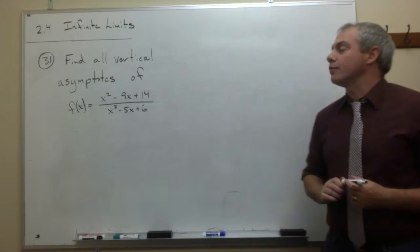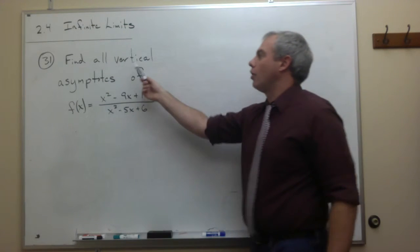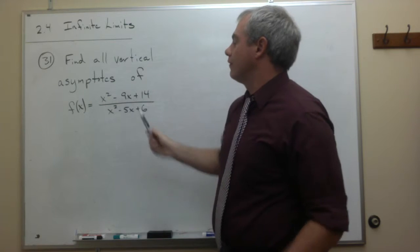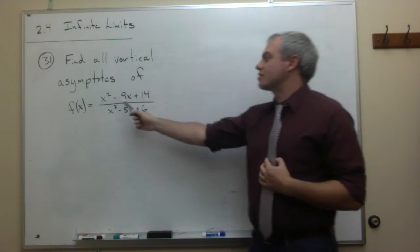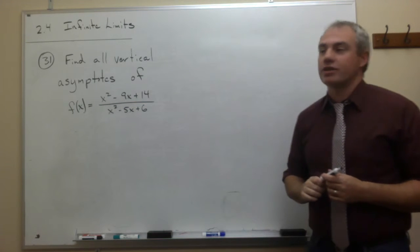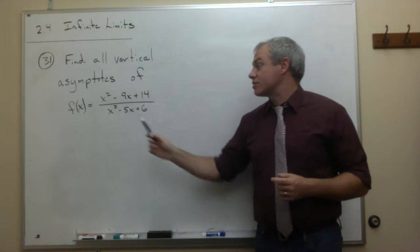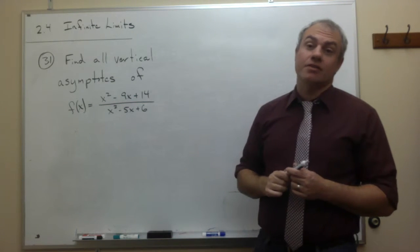For problem number 31, we're asked to find all vertical asymptotes of this function, the function f(x) equals x squared minus 9x plus 14 divided by x squared minus 5x plus 6.